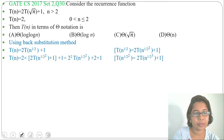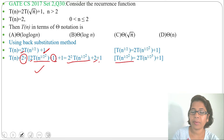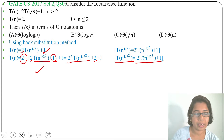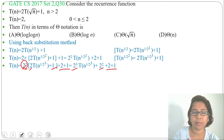After substitution we get: simplifying, 2×2 = 2², then T(n^(1/2²)), and 2×1 + 1 = 2 + 1. Again substituting in place of T(n^(1/2²)), we get the next expansion. Simplifying: 2²×2 = 2³, then 2²×1 = 2², and before we had 2 + 1, so it becomes 2² + 2 + 1.